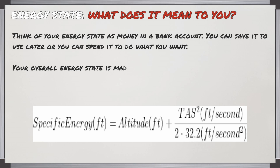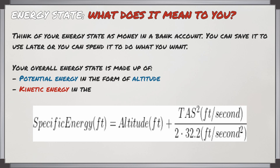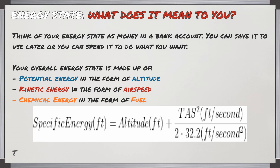Your overall energy state is made up of potential energy in the form of altitude, kinetic energy in the form of airspeed, and chemical energy in the form of fuel if you have an engine.